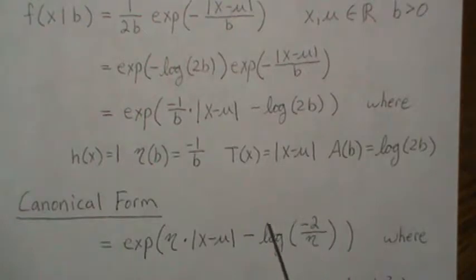And then this is the times of sufficient statistic. But we have to write this log partition in a way that if we stick back in the value of eta, then we get our log partition, log of 2b, and this is the form.